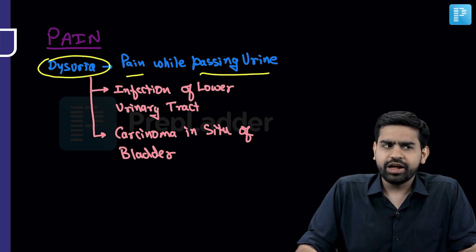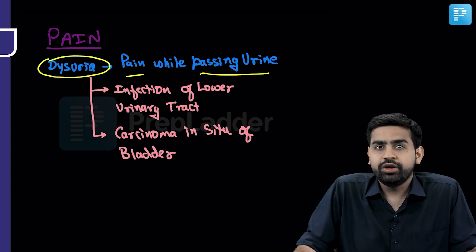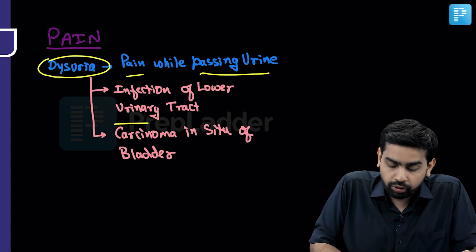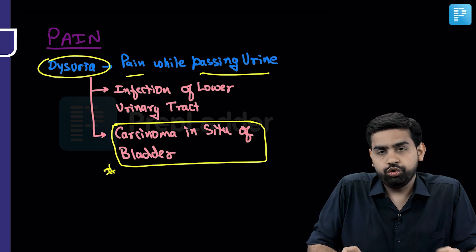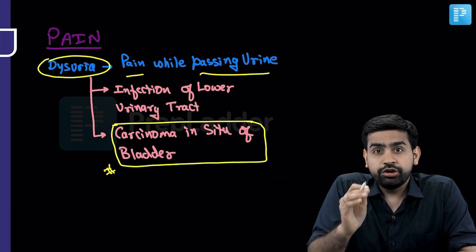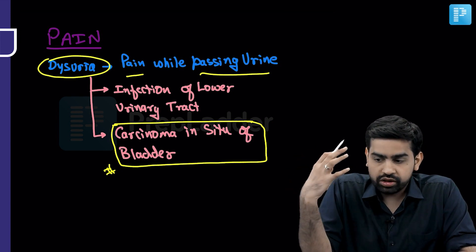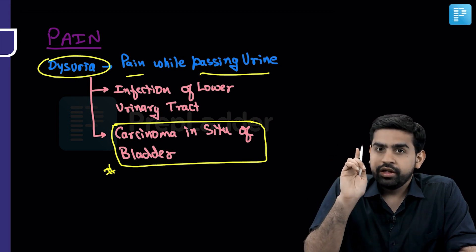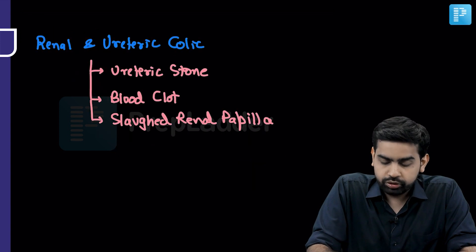The most important reason for dysuria is infection — if the patient is having a urinary tract infection, they might have dysuria. But even more important than UTI is carcinoma in situ (CIS) of the urinary bladder, which may present with irritative symptoms. So if they ask which bladder carcinoma presents with irritative symptoms, the answer is CIS — carcinoma in situ of the urinary bladder.